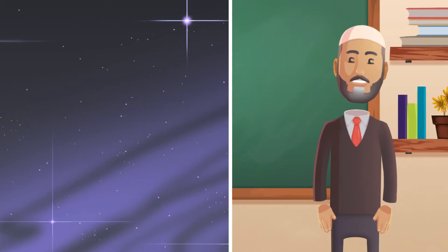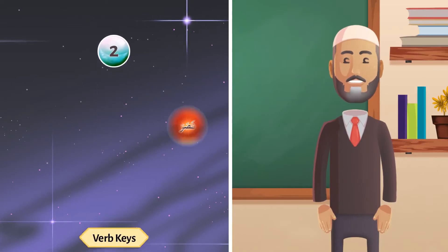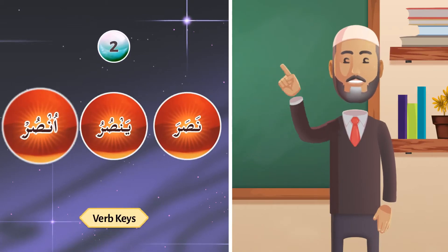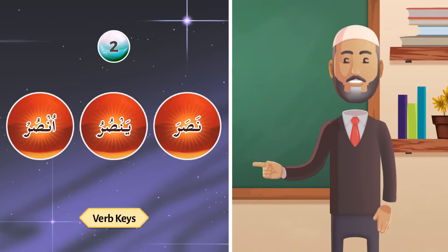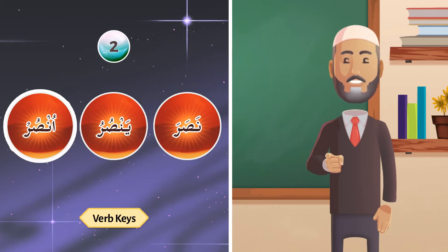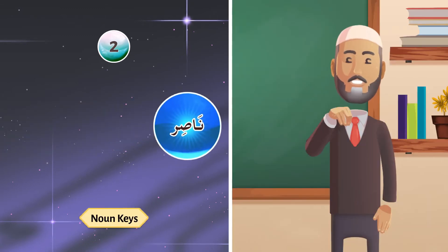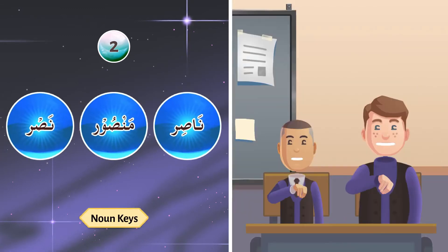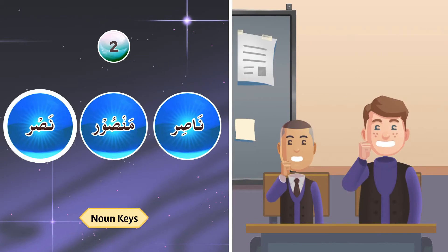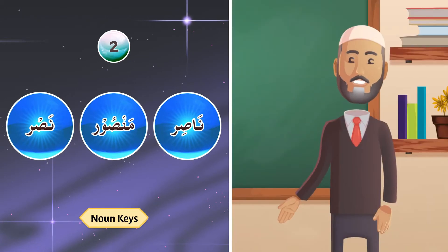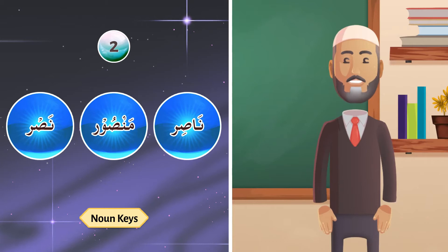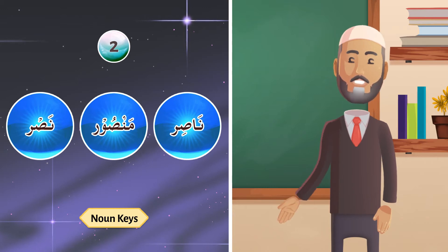Let's take the second style, which is nasara, yansuru, unsur. Repeat after me: nasara, yansuru, unsur. Nasir, mansoor. As you know, in the second style, nasir and mansoor will not change — abid, ma'bud, the fa'il and maf'ool pattern remain the same. The change is only in the first three verb keys.